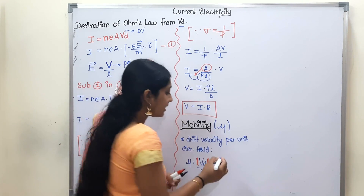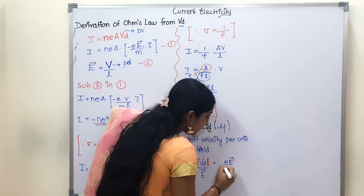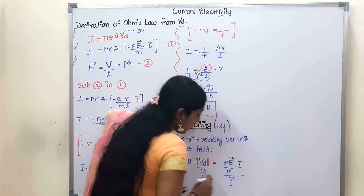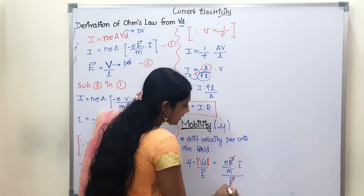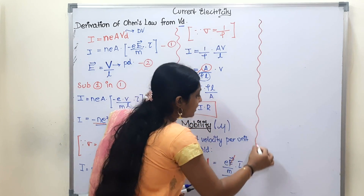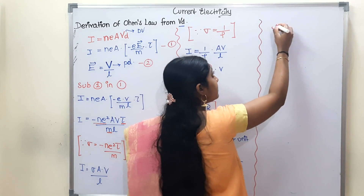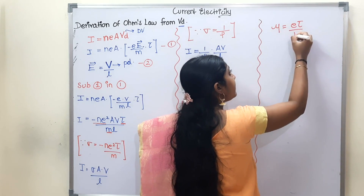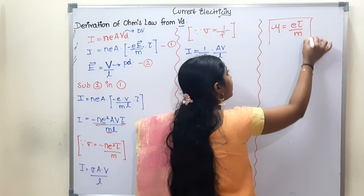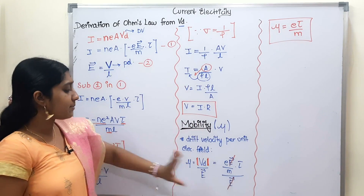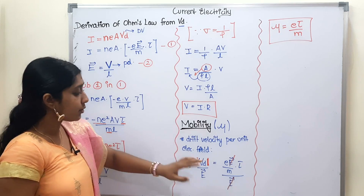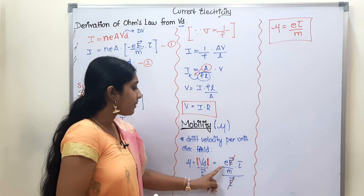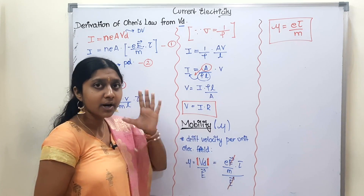Using the Vd formula: Vd equals e·E by m into tau. Dividing by the electric field, E cancels out. So the final formula for mobility is mu equals e·tau by m.